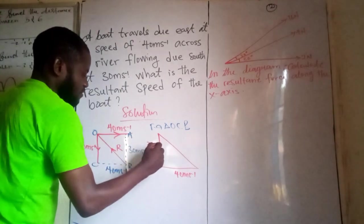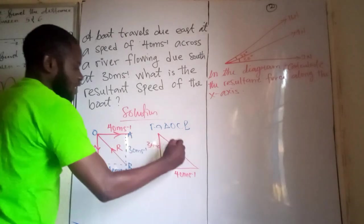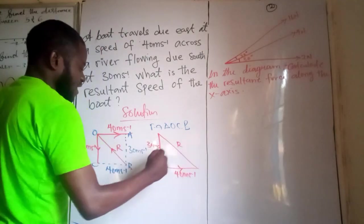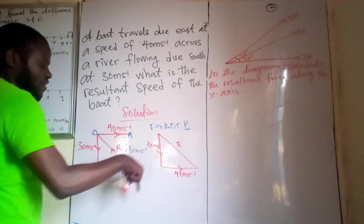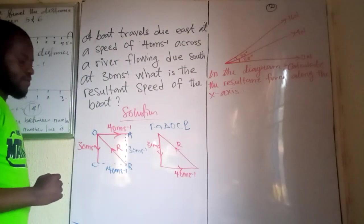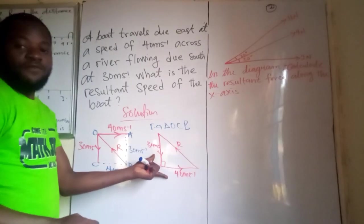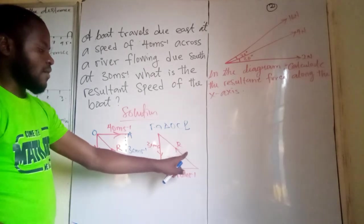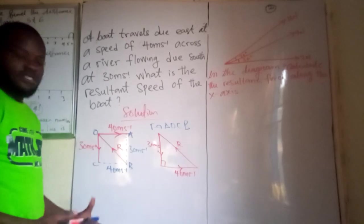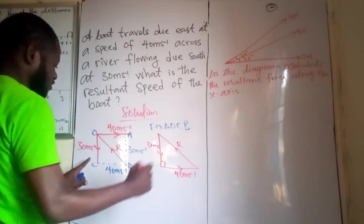So here is 30 meters per second and this is our R. So the boat is traveling like this, while the river is flowing like this. And here is our resultant. Now, if you look at this now, these are the two adjacent sides of the right angle triangle. And this place is our hypotenuse that we are looking for. So we can use what? The Pythagoras theorem.